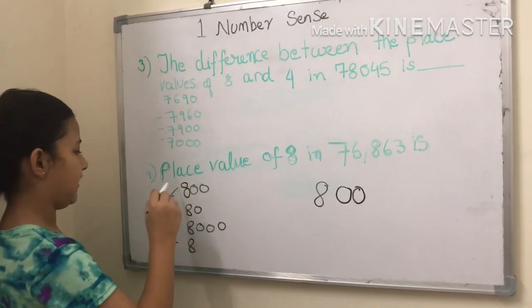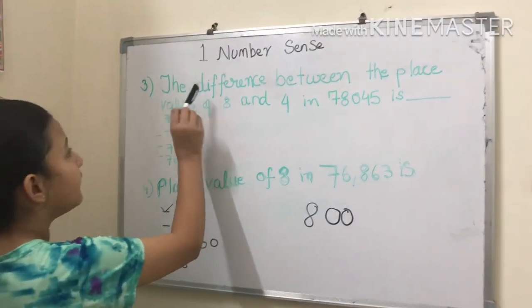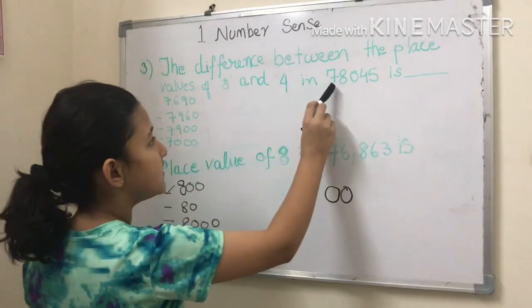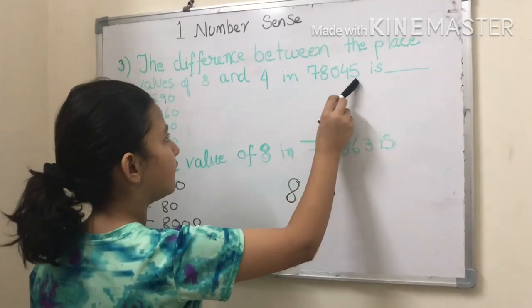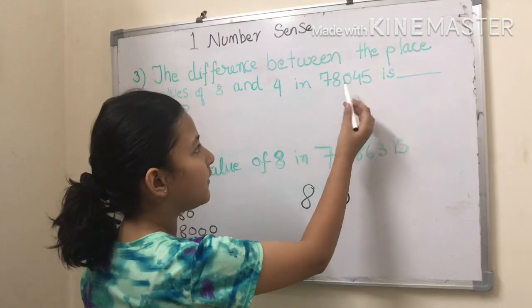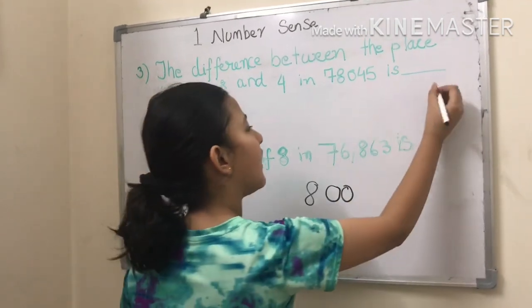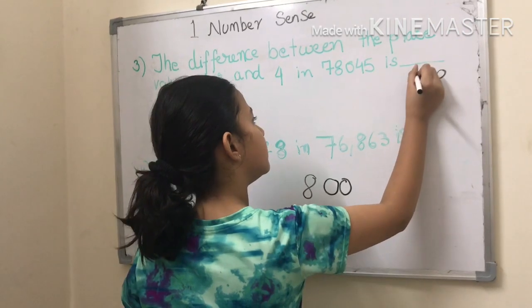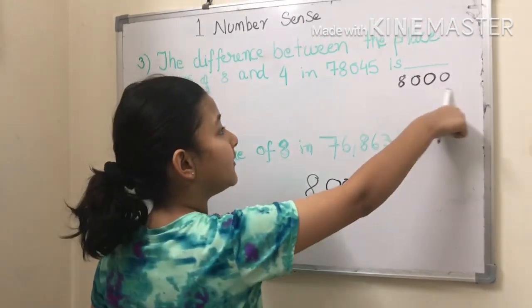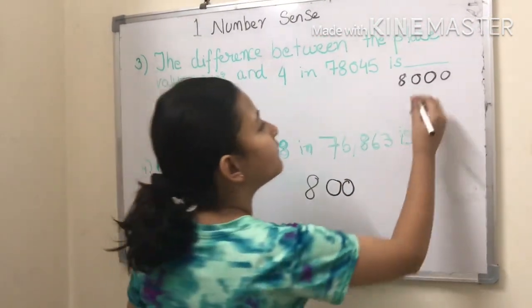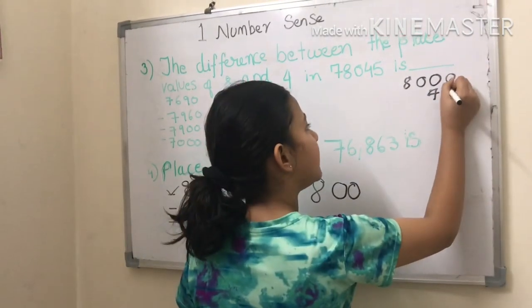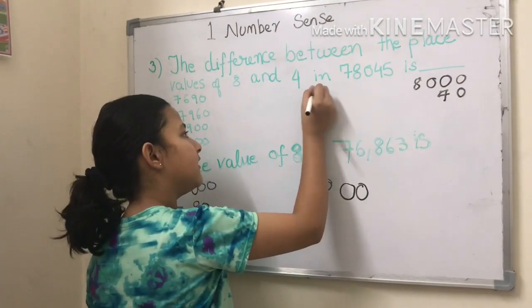So the difference between the place value of eight and four in 78045 is... First let's do eight. How many numbers are there? One, two, three. So there I will turn them into zero and I'll take eight - that's gonna be three. Now I'll take four, and then there's only one, so I'll take it zero. Now I'll take eight.